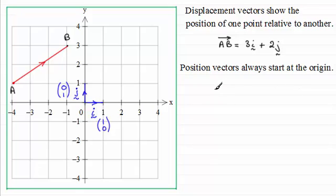So for example, suppose I took the vector C and that was 3i plus 2j. What would that look like? Well we have a starting point because position vectors always start at the origin.